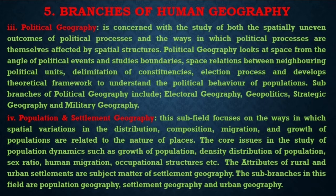The fourth sub-discipline is population and settlement geography. This sub-field focuses on the ways in which spatial variations in the distribution, composition, migration, and growth of population are related to the nature of places. Core issues include the study of population dynamics such as growth of population, distribution and density of population, sex ratio, human migration, and occupational structures. The attributes of rural and urban settlements are the subject matter of settlement geography. Sub-branches in this field include population geography, settlement geography, and urban geography.